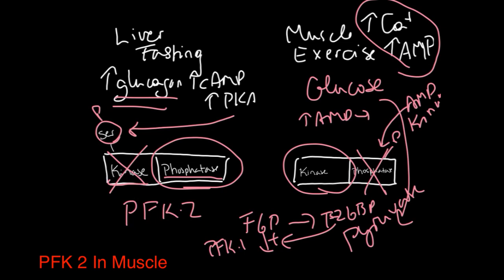This promotes glycolysis in the muscle, where the phosphorylation in the liver inhibits glycolysis, letting the glucose be released to the rest of the body.